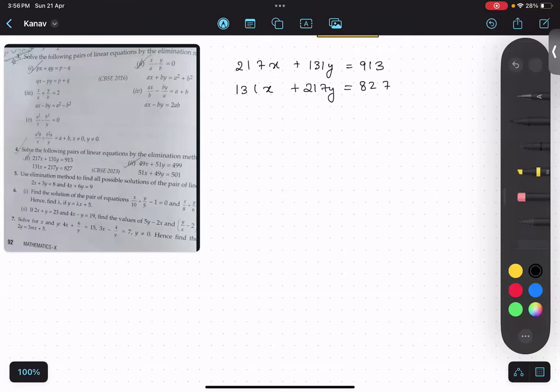So in this fourth question, these are special type of questions where if you observe, this number is same as this and this particular number is same as this. That's a special condition to it.